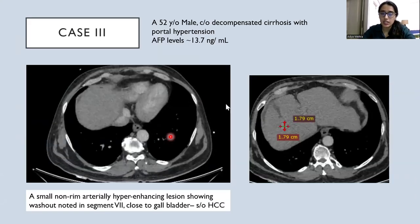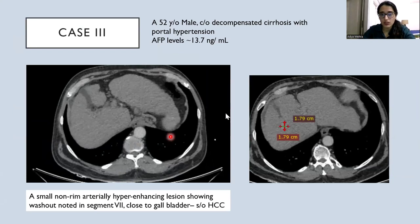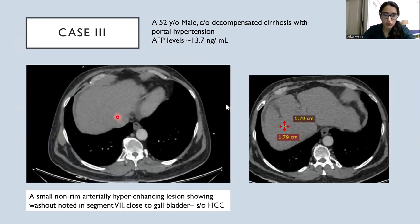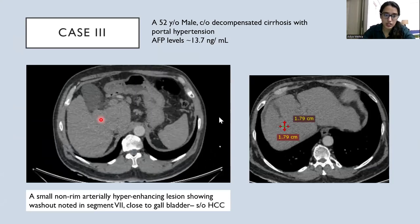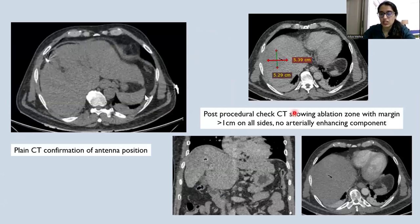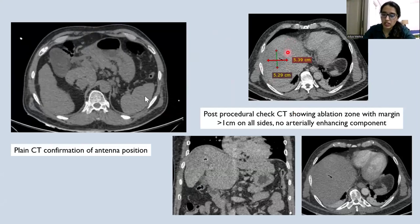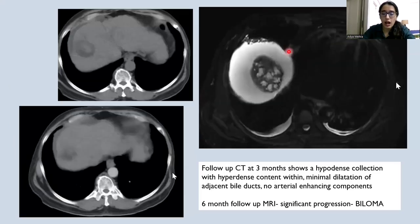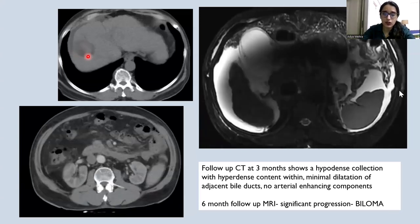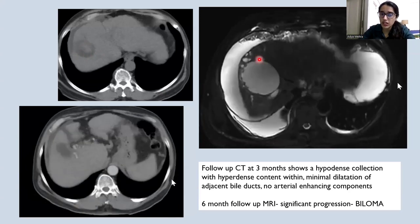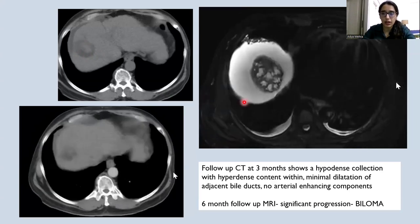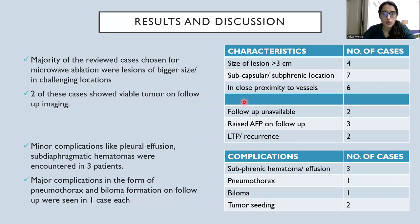Case 3 is a 52-year-old male with decompensated cirrhosis and portal hypertension with raised AFP levels. CT abdomen showed a small non-rim arterially hyper-enhancing lesion with washout close to the gallbladder in segment 7. Post-procedural check CT showed an ablation zone with margin more than 1 cm on all sides and no arterially enhancing tissue. However, at 3-month follow-up CT, a hypodense collection with hypodense content was seen with minimal dilatation of bile ducts, showing significant progression on 6-month MRI follow-up — confirming biloma formation, a rare complication.